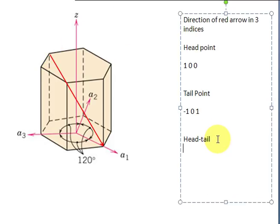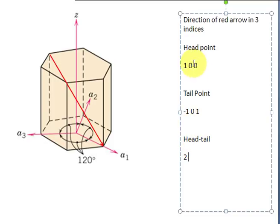So if you take the head minus the tail, it will be 1 minus minus 1, which will be 2. 0 minus 0, it is 0. And 0 minus 1, which is minus 1. So now you have the indices in three indices, which is 2, 0, minus 1.